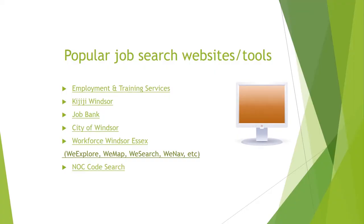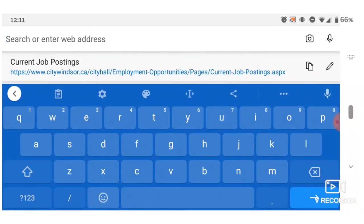On the screen you'll see a number of websites. These are just a few of the tools available online to job seekers, and I'm going to go through each of them and give you a quick synopsis on what they're there for — whether they're job posting boards or tools with important information for job seekers. Starting with Employment and Training Services, which has its own website where we post job postings that we're recruiting for with the employers we work with.